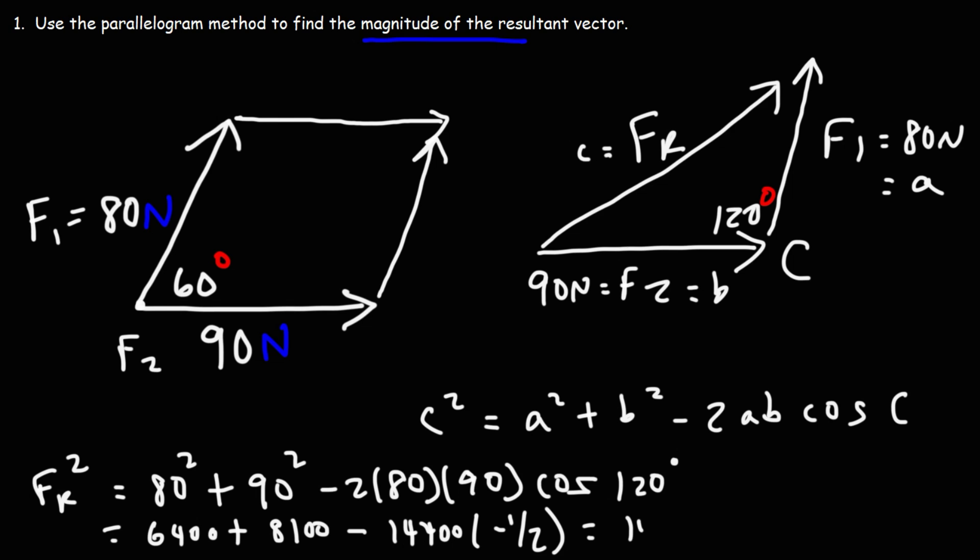So 6,400 plus 8,100. That's 14,500. The two negative signs will cancel. And then half of 144 is 72. So half of 14,400 is going to be 7,200.